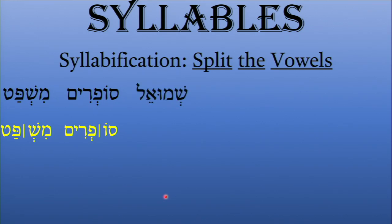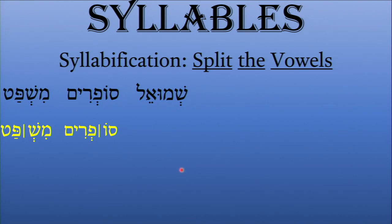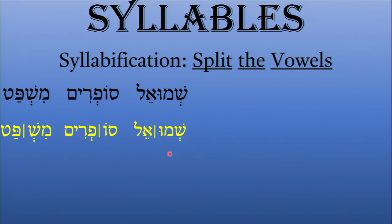For the word 'Shmuel' — Samuel — there is a Shva at the very beginning. A Shva at the beginning of a word is always a vocal Shva, which means I'd separate before it — but there's nothing before it, so I don't draw any separation. However, I do need to create a separation between the two vowels, the Shuruk and the Tsere. So I get 'shmu' as the first syllable and 'el' as the second syllable.